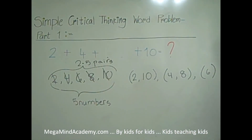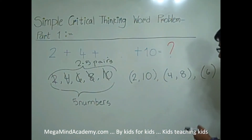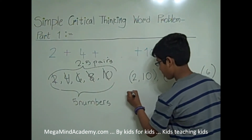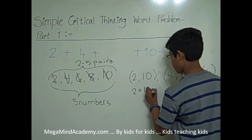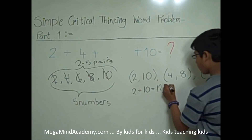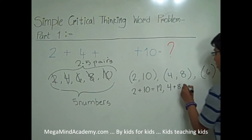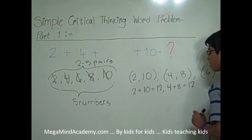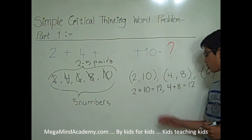The next thing we have to do is add up each pair — find the sum of each pair. Let's add 2 and 10: 2 plus 10 is equal to 12. Next, we add 4 and 8: 4 plus 8 is also equal to 12. So that means the sum of each pair is equal to 12.